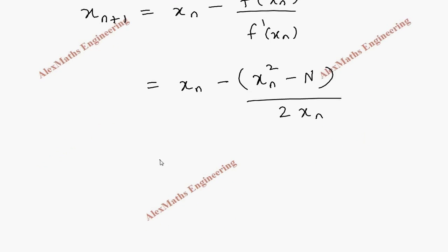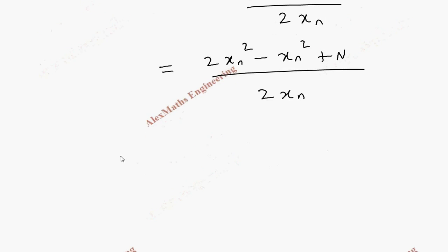Now when we take LCM, LCM is 2x n. Here it will become 2x n square. Then when I take the minus sign inside it is minus x n square plus n. Now finally we get the formula x of n plus 1 is x n square plus n whole divided by 2x n.